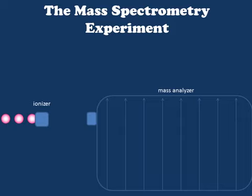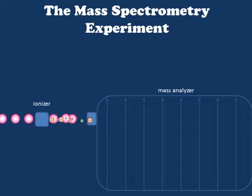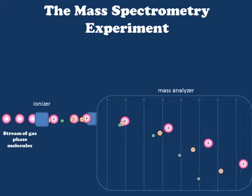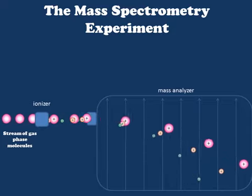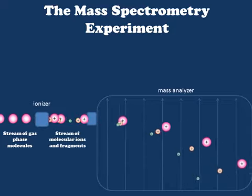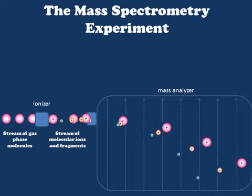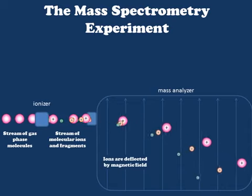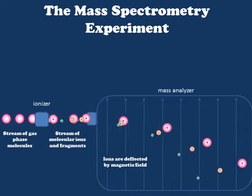Now let's take a look at how all of these different elements can be combined into a single experiment which will tell us something about the mass of our compound. I'm going to animate this schematic of a mass spectrometer. As a stream of gas phase molecules enters from the left-hand side, it reaches the ionizer where the beam of molecular ions and fragment ions is generated. The stream of molecular ions then moves to the mass analyzer, where the ions are separated in space based upon their mass — or more accurately, on their mass-to-charge ratio. The ions within the mass analyzer are deflected to a different extent by the magnetic field, meaning each beam reaches the other end at a different position.